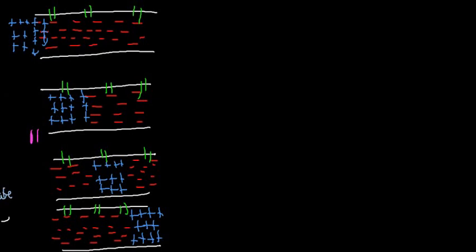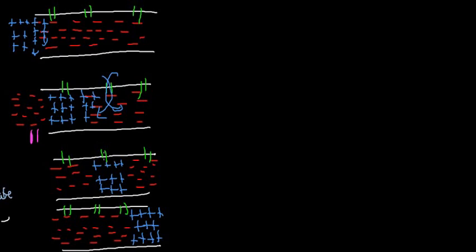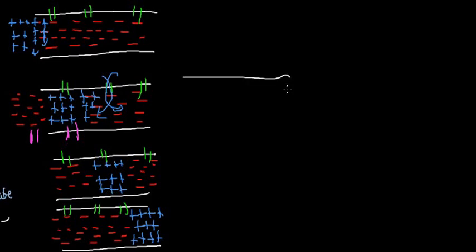At this point a potassium channel opens, causing the area around it to become negative because potassium is positive and it's coming out — so we lose positive charge. This keeps going: positive charge reaches the next channel, sodium flows in, then a potassium channel opens and positive charges escape. In this way, this signal can move along the tissue, along a neuron.